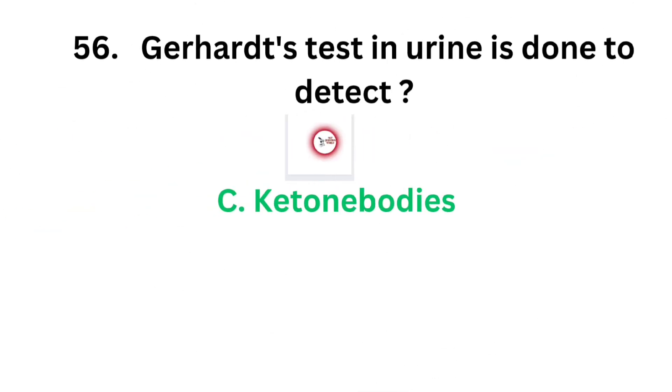The correct answer is option C, ketone bodies. Gerhardt's test in urine is done to detect ketone bodies.